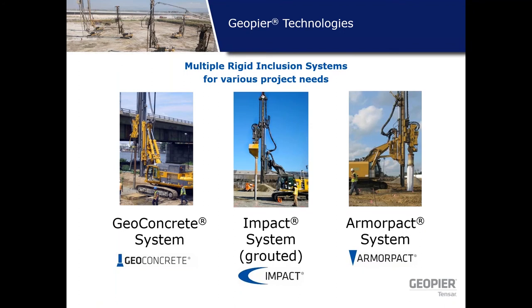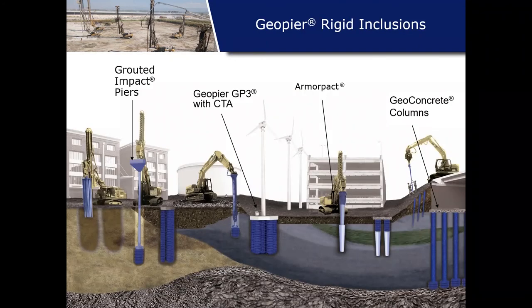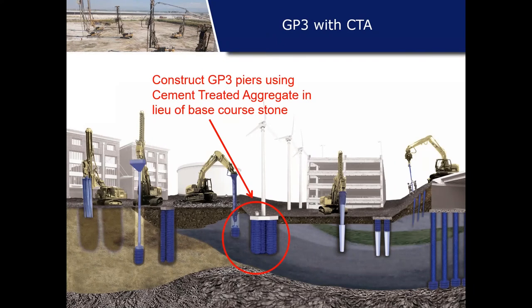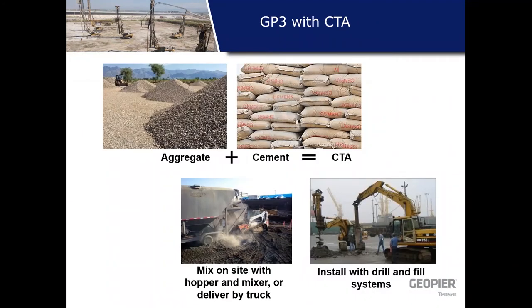We have a lot of options for rigid inclusions: the geoconcrete system, the grouted impact system, and the ArmorPak system, among others. The simplest rigid inclusion we can make uses our GeoPier system: instead of placing just aggregate in the drilled hole, we mix in bags of cement or order cement-treated aggregate. The cement hydrates under natural moisture, hardens, and becomes a rigid inclusion — much stiffer than surrounding soils. Adding cement changes the mechanics so all load is attracted through arching via the gravel pad into the pier, resolved through skin friction and end bearing.